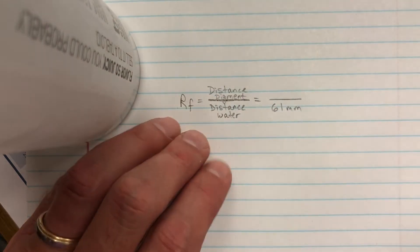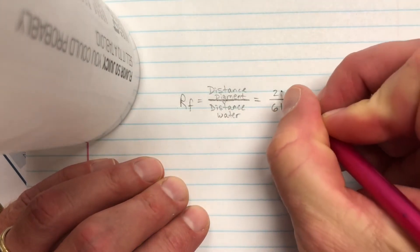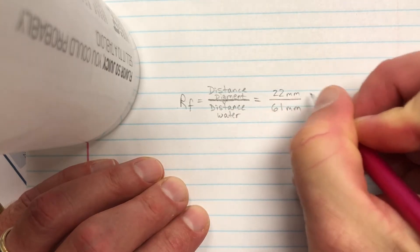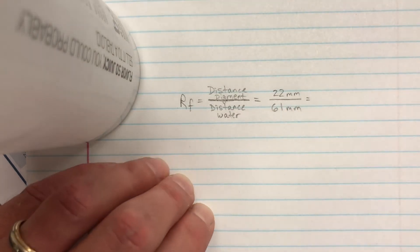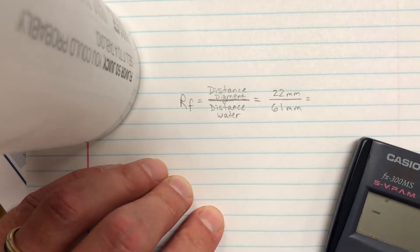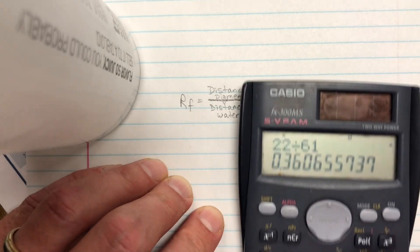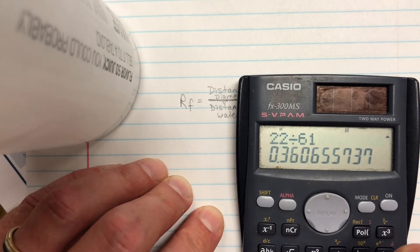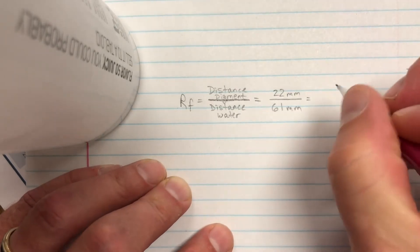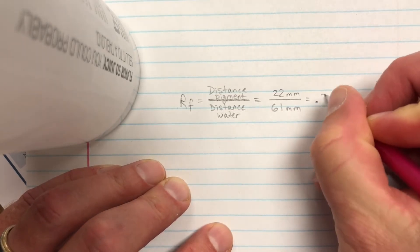So 22 millimeters, that's going to give me 22 divided by 61. It's going to give me a ratio, and I'm going to use two sig figs here. It's going to give me 0.36, so 0.36 is going to be the RF value for my yellow pigment.